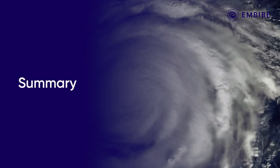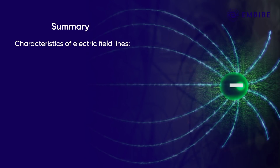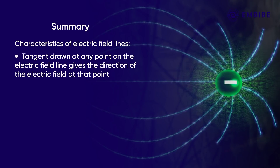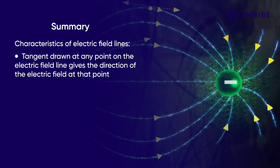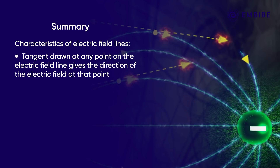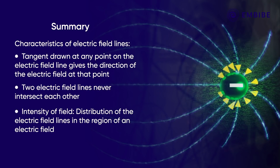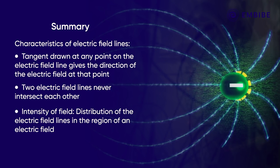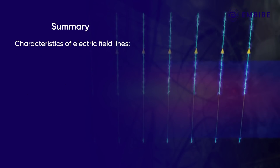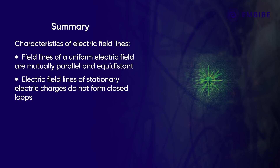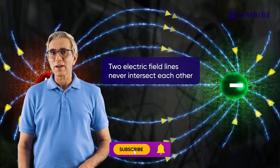Let's summarize. Here we discussed the important properties of electric field lines. The tangent drawn at any point on an electric field line gives the direction of the electric field at that point. Two electric field lines never intersect each other. The distribution of electric field lines in a region indicates its intensity. Field lines of a uniform electric field are mutually parallel and equidistant. Electric field lines of stationary electric charges do not form closed loops.